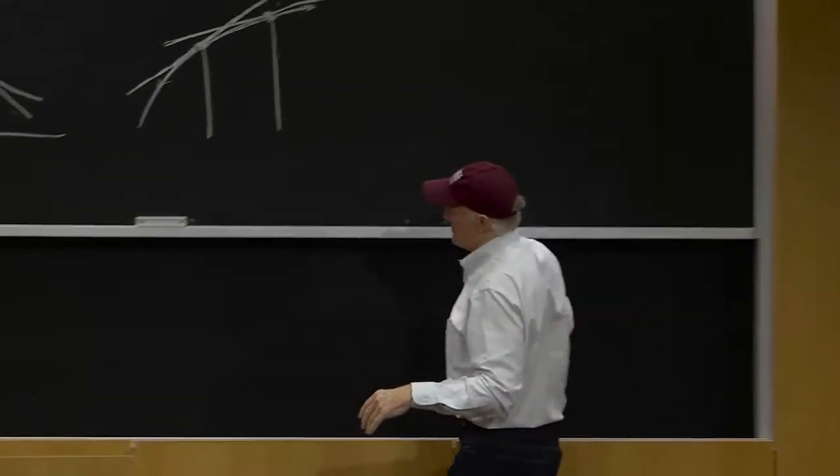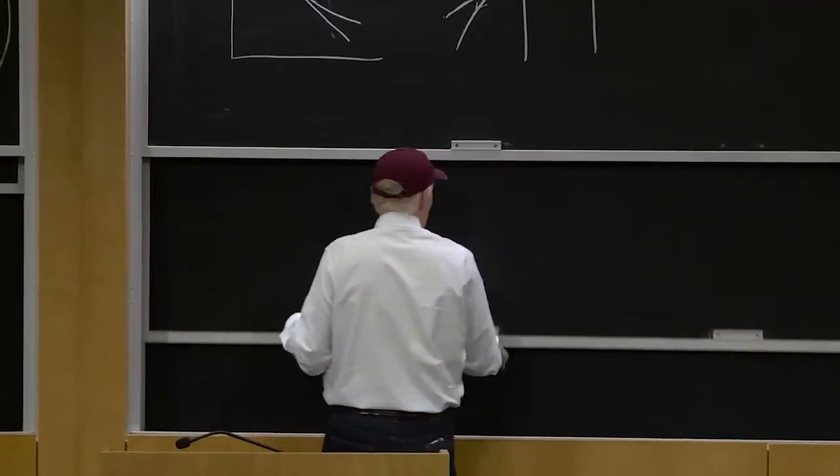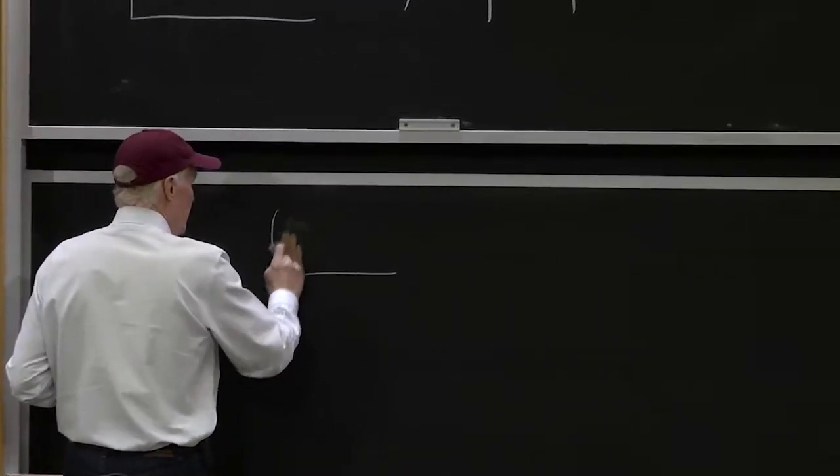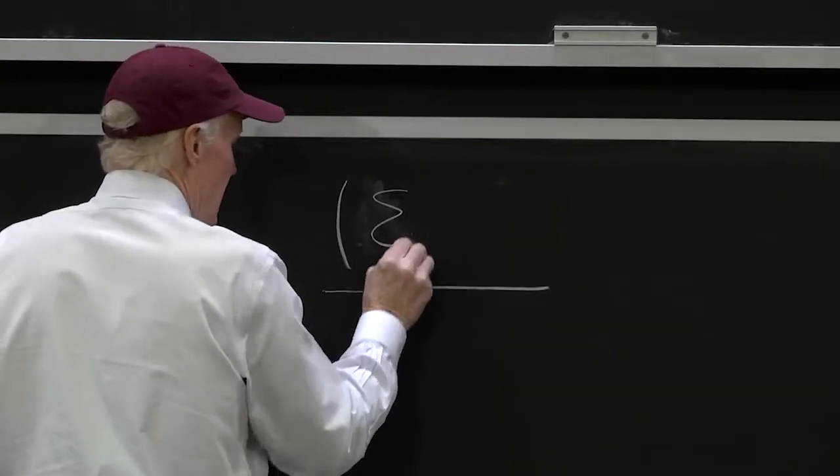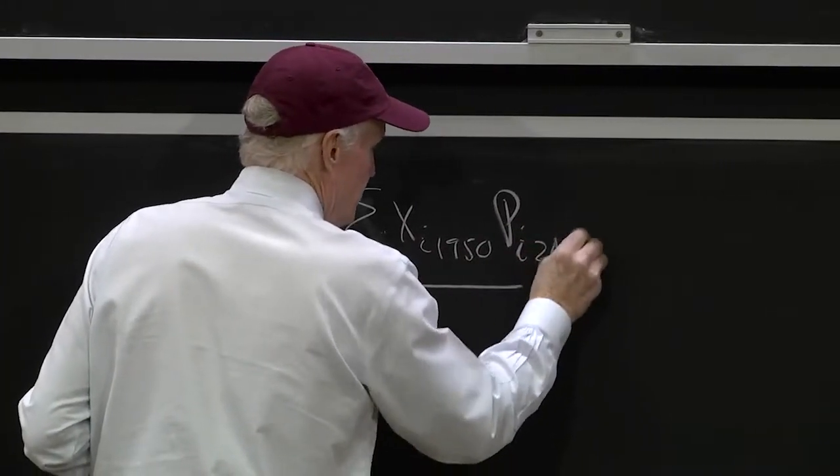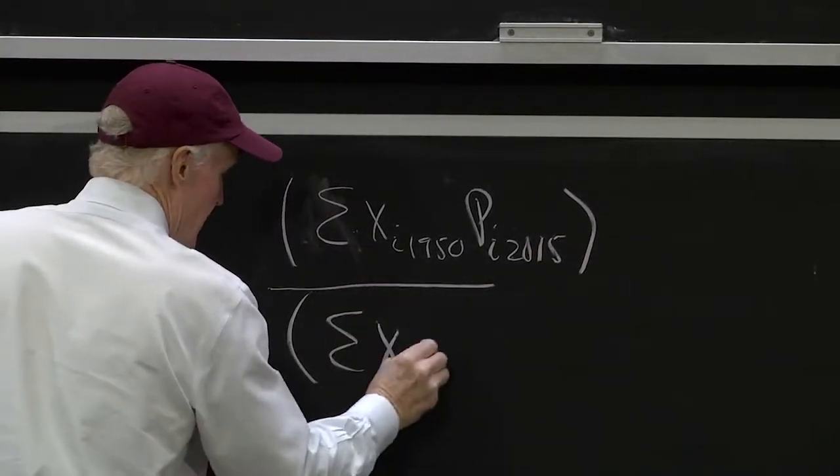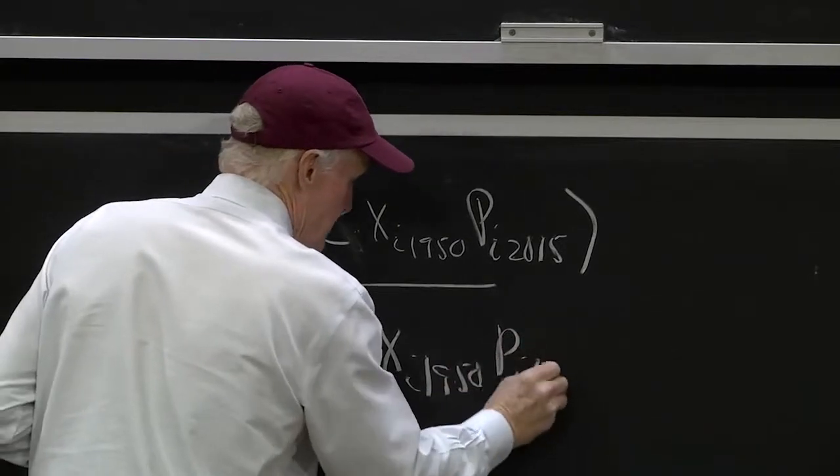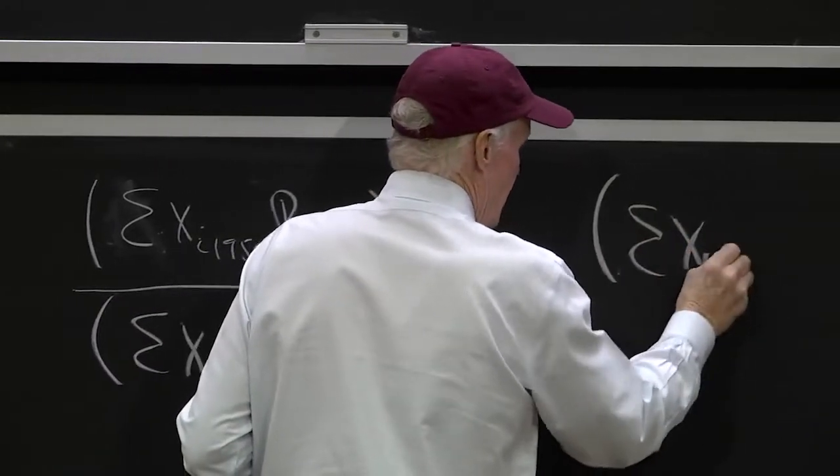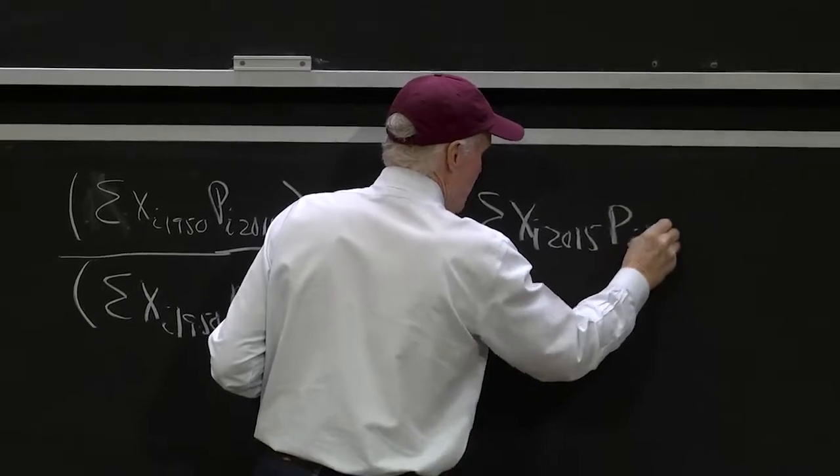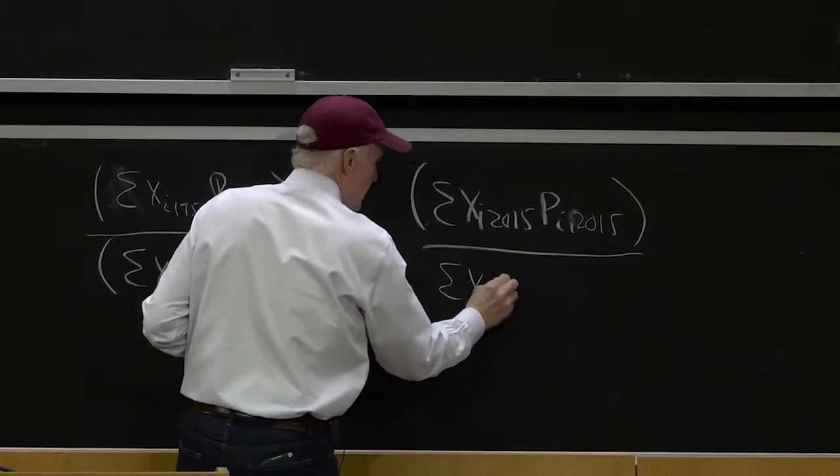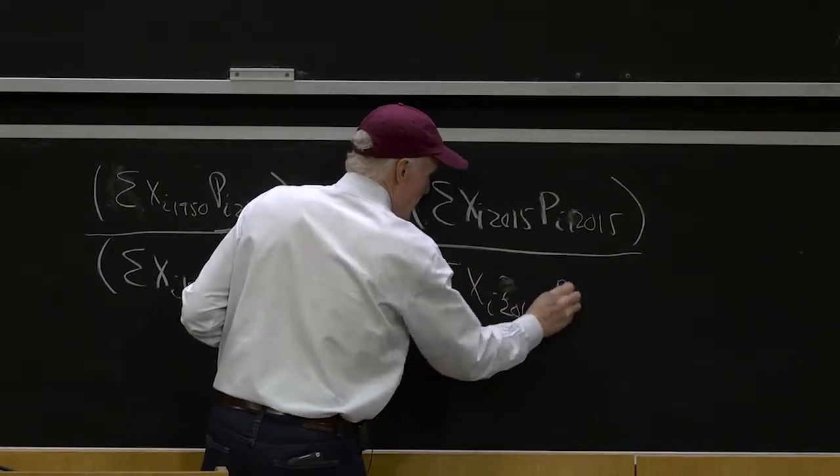What if I wanted to go over a long period of time? What if I wanted to go from, say, 1950 to today? So I would put sum xi 1950 pi 2015 divided by the sum of xi 1950 pi 1950 versus sum of xi 2015 pi 2015 divided by the sum of xi 2015 pi 1950.